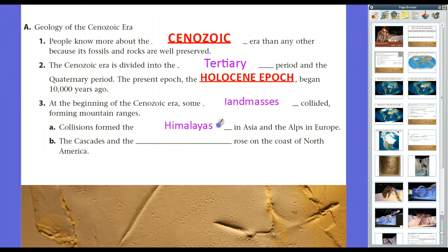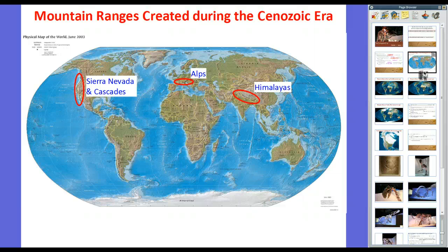For example, the Himalayas in Asia and the Alps in Europe are two mountain ranges created by these land masses colliding. And in the United States, the Cascades and the Sierra Nevadas out west in California rose on the coast of North America. So if we look right here, mountain ranges created in the Cenozoic Era.